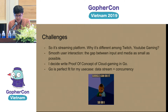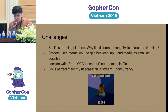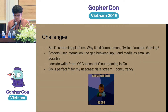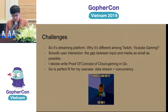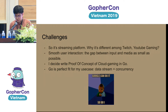The challenge is that popular media streaming platforms like Twitch and YouTube Gaming all have a few seconds of latency. But our goal is to have smooth user interaction — we need to keep the gap between input and media as small as possible. I was curious how Google did that, so I decided to write a proof of concept in Go because I'm familiar with it. It turned out that Go is perfectly fit for my case because it has good support for data streams and concurrency.